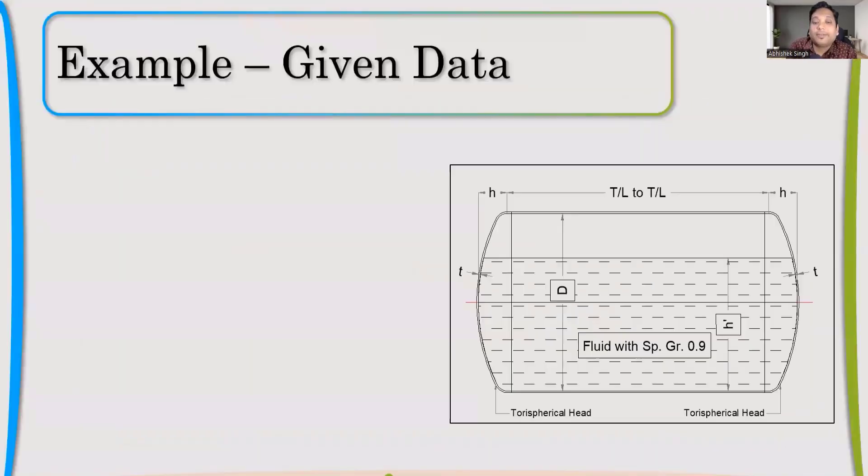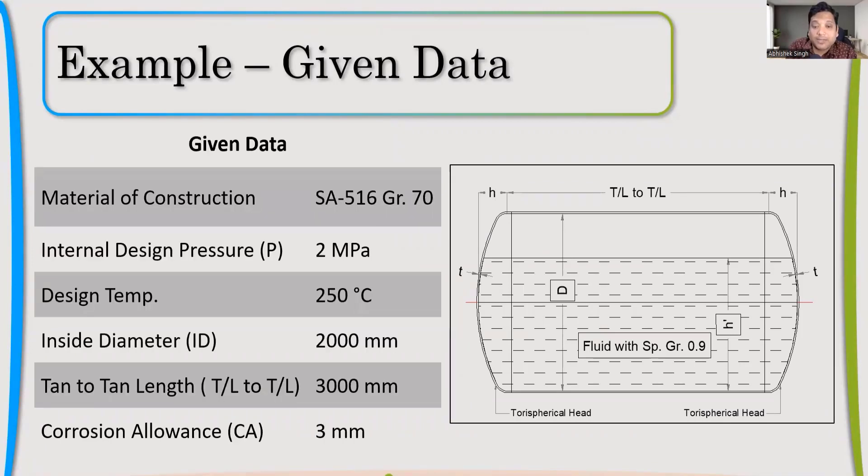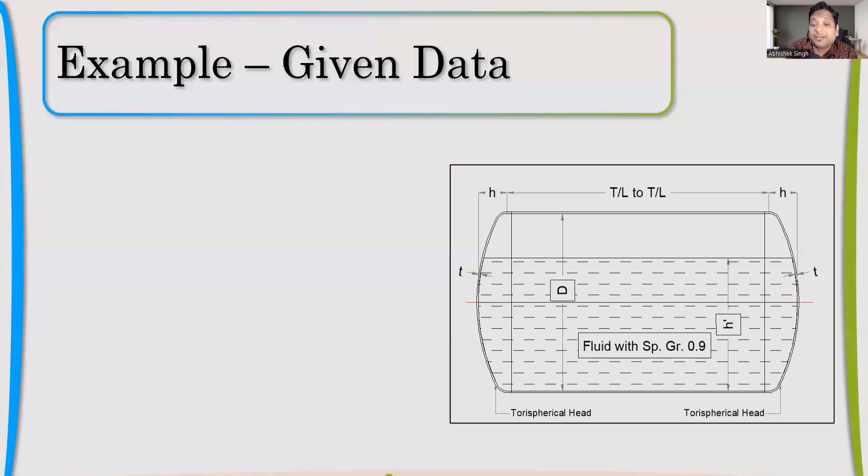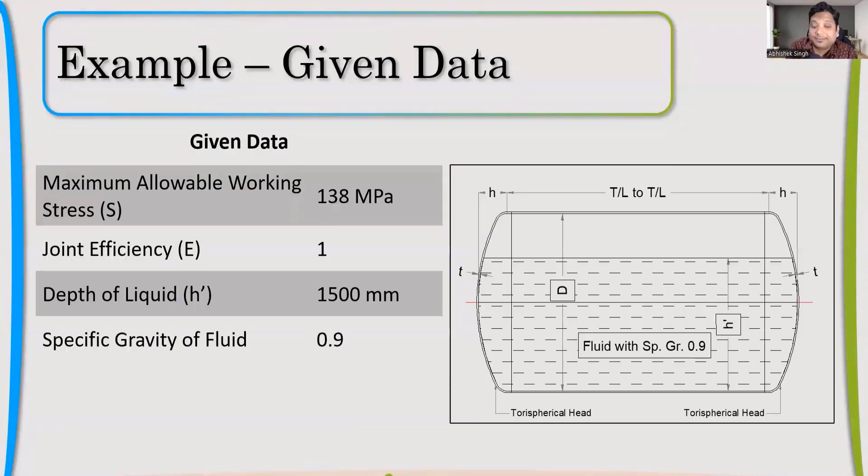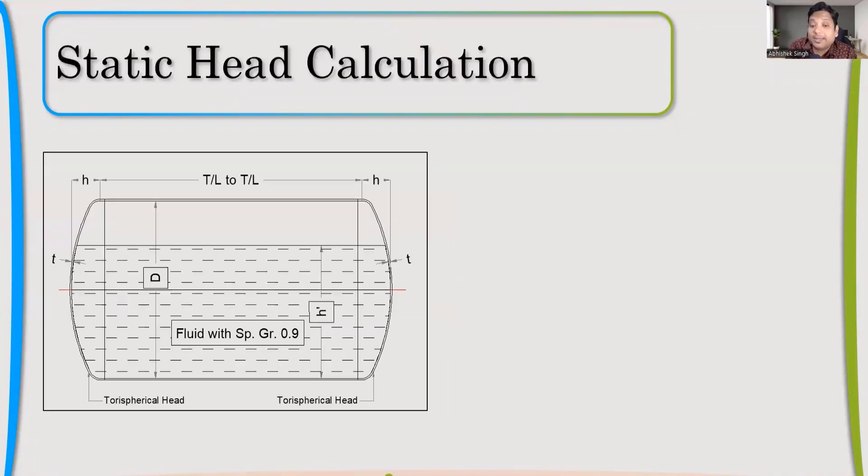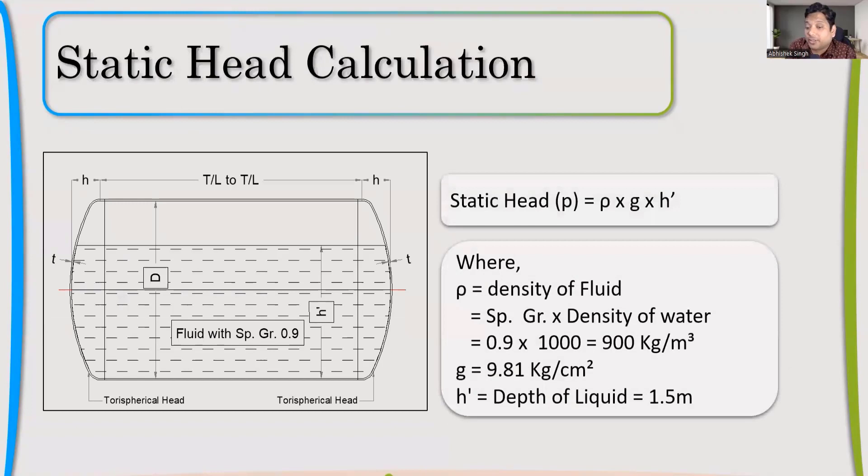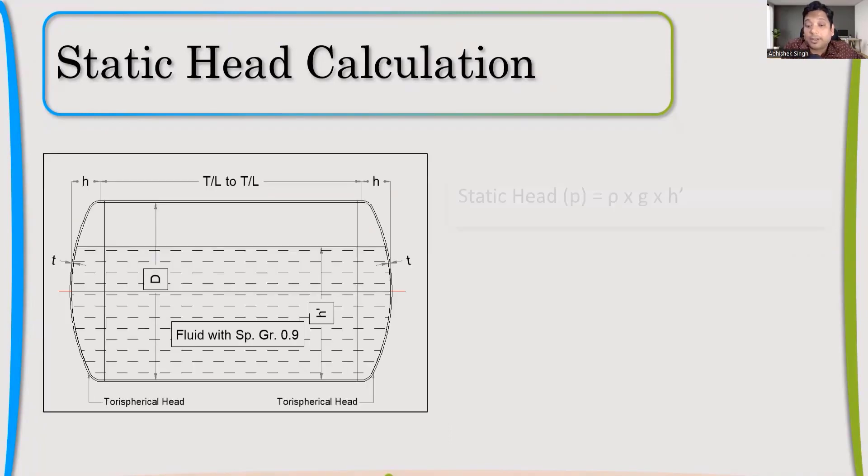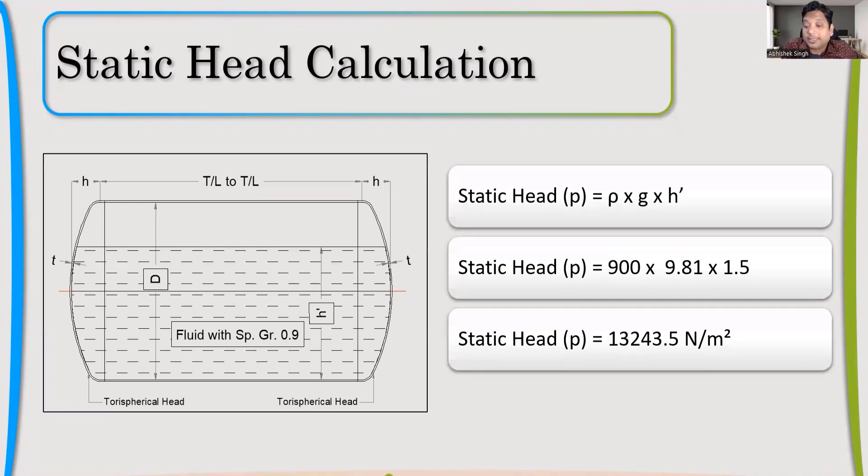Now, we have given an example. These are the values you can consider. If you see there is static head also, so first we need to calculate the static head. The depth of the liquid is 150, specific gravity of liquid 0.9. Using rho*g*h, we will calculate the static head P, which in this case is 0.013 MPa.